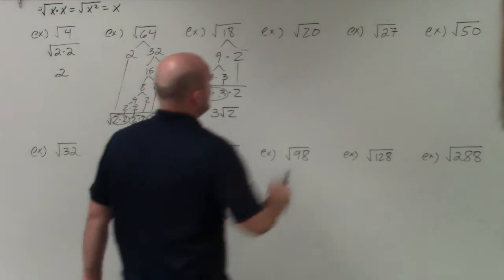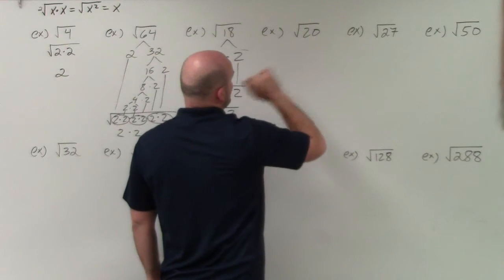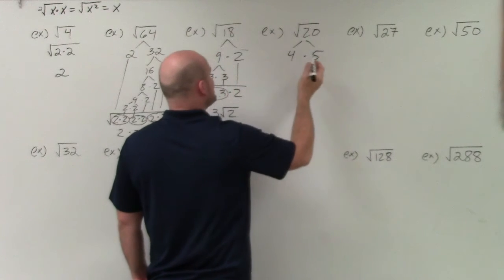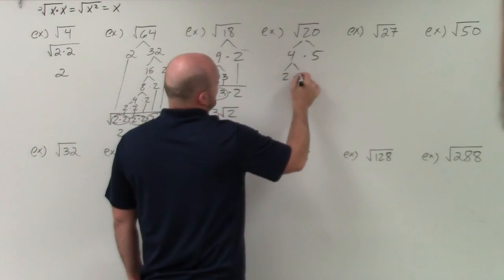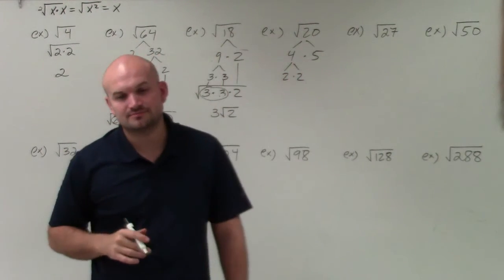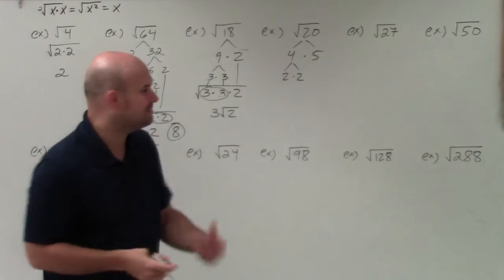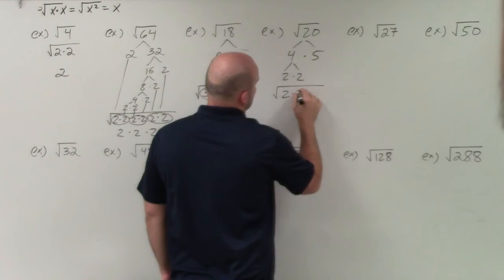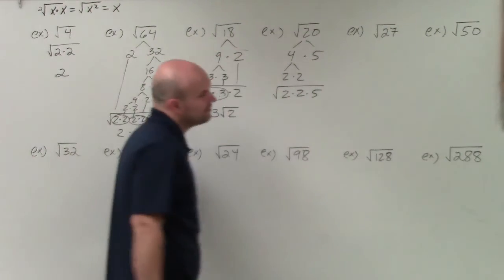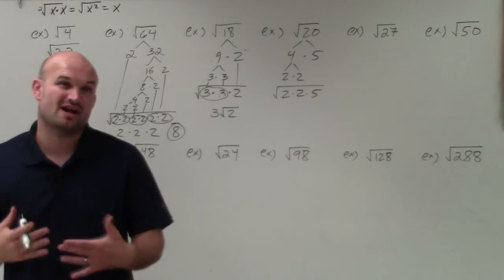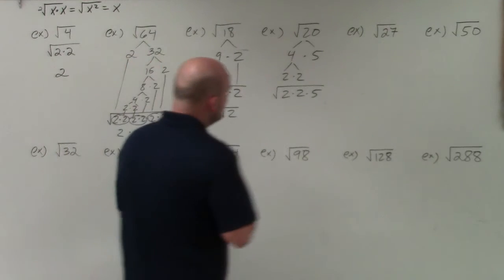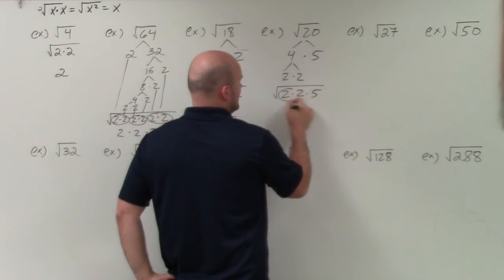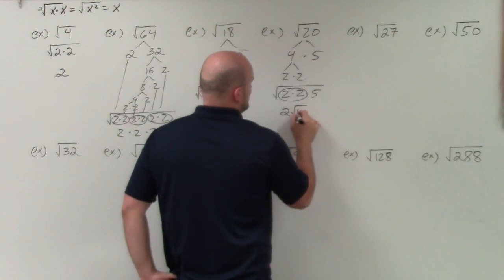For the square root of 20, just break it down — it doesn't really matter how. You can do 4 times 5 or 10 times 2. I'll break it down to 2 times 2 times 5. Just make sure when you rewrite it, you express it as a product of all prime numbers. So the square root of 2 times 2 is just 2, leaving us with 2√5.